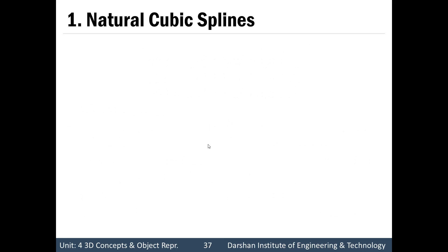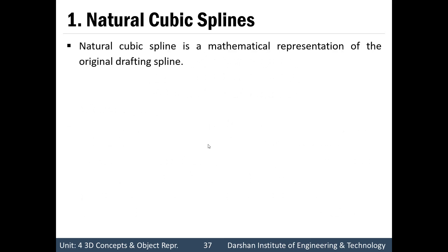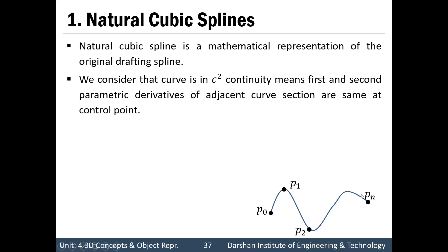The first method is Natural Cubic Spline. A natural cubic spline is a mathematical representation of the original drafting spline. If we have n+1 control points from p0 to pn, the total curve sections will be n — first is p0 to p1, second is p1 to p2, and so on up to pn. We consider the curve to be in C2 continuity, meaning the first-order and second-order derivatives of the curve sections at any intermediate point will be the same.